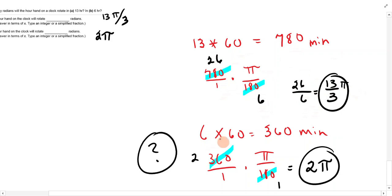How about for 6 hours, 6 times 60 is 360 minutes. We do the same thing, 360 over 1 times pi over 180, and 180 goes into both of those. So, once and twice, so it ends up being 2 pi.